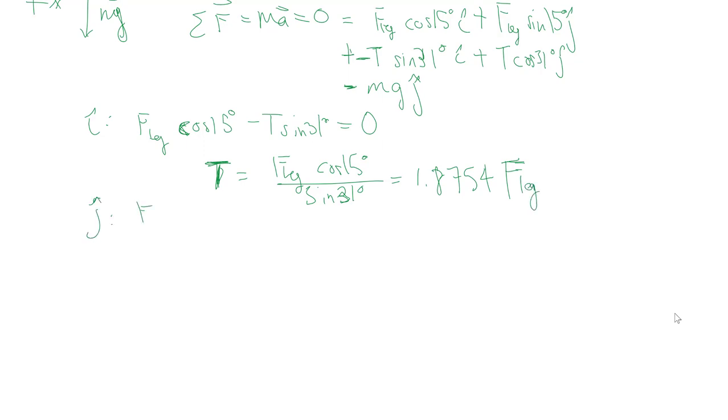Then we look at the j which is our second equation also equals zero. But now we can sub in this thing for t and then we can collect like term and isolate. So we're going to dump mg on the other side and then we'll factor out the f leg.